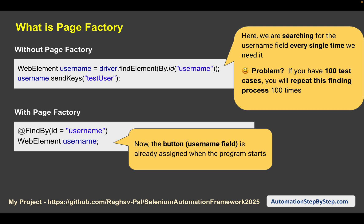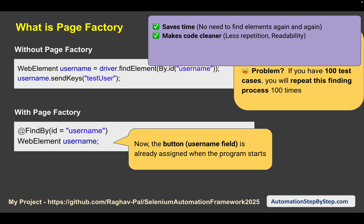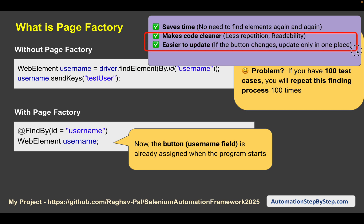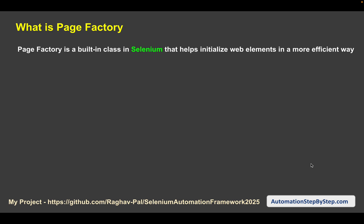Using Page Factory will save a lot of time because elements need not be found again and again. It makes the code cleaner and easier to update. Page Factory is a built-in class in Selenium, so there is no extra library to add. Elements are initialized once and can be used directly multiple times.